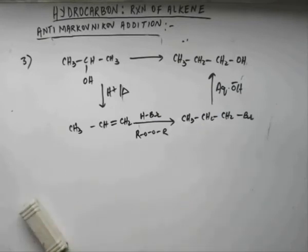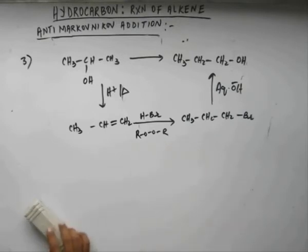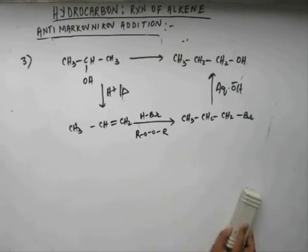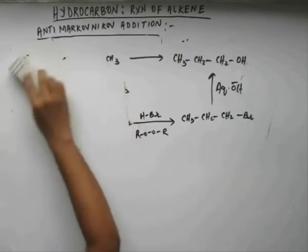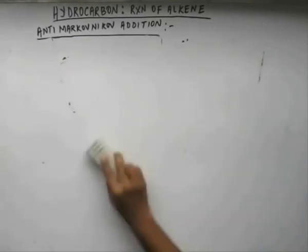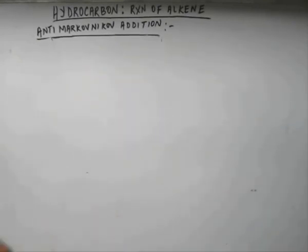Nevertheless, this is the pathway via which you can get the required conversion done. This is all about anti-Markovnikov addition. Let's move ahead to the third kind of addition reaction of alkynes.